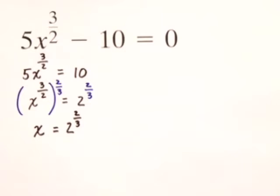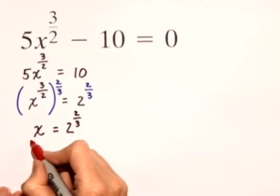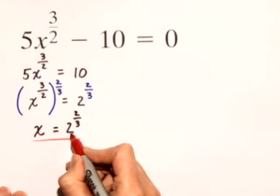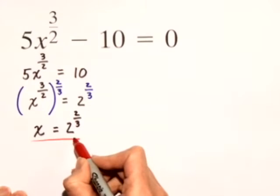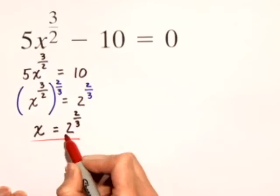So it's important that we check this answer. We're going to check x equals 2 to the 2 thirds power by substituting this value in for x in the original equation.